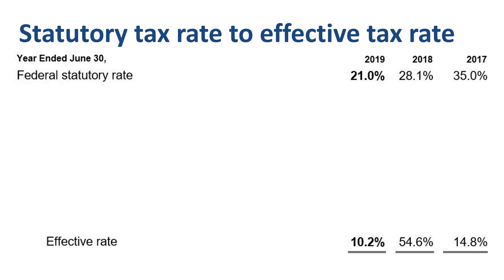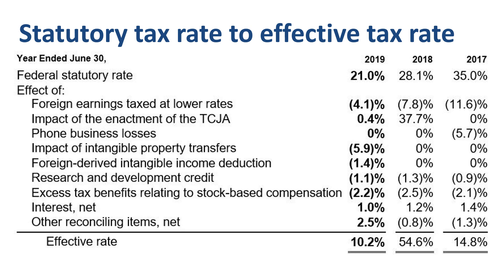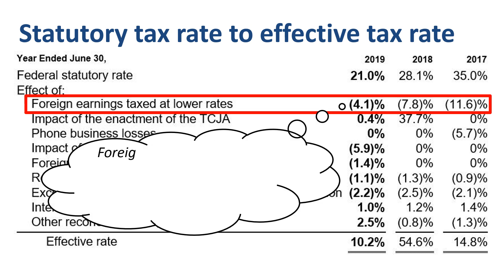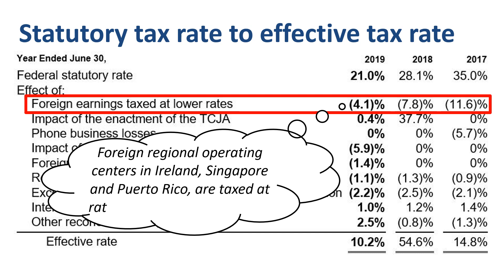Here's the list of reconciling items between statutory tax rate and effective tax rate, downloaded from the Microsoft Annual Report. A recurring line item is foreign earnings taxed at lower rates, which lowers the effective tax rate. The vast majority of the foreign income before tax is generated in foreign regional operating centers in Ireland, Singapore, and Puerto Rico. This income is taxed at rates lower than the US statutory rate, both before and after the US tax law change.